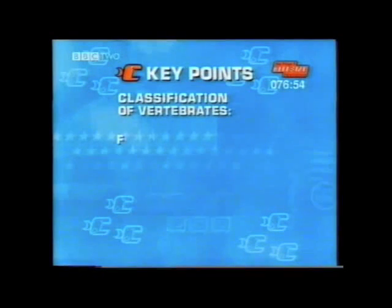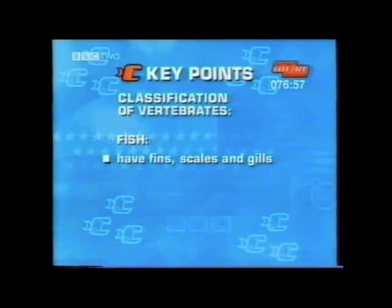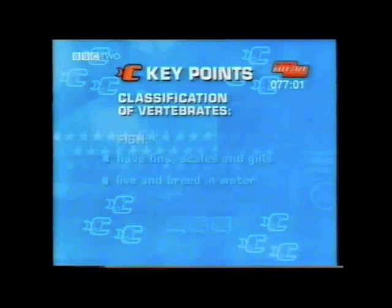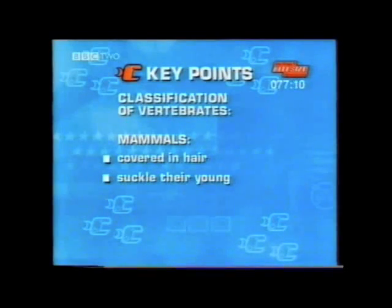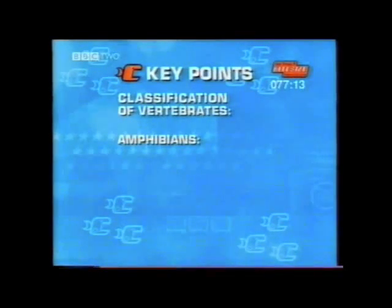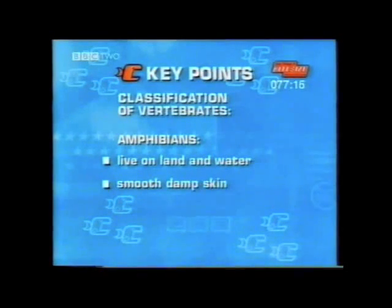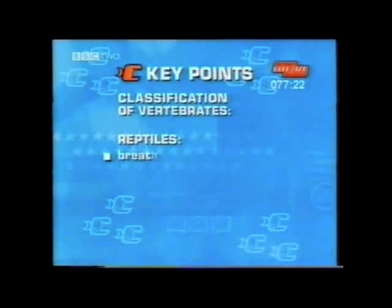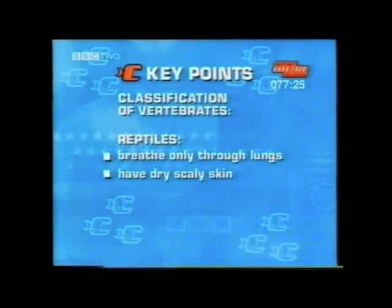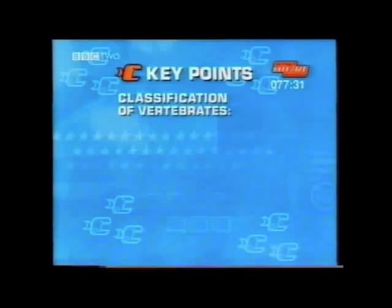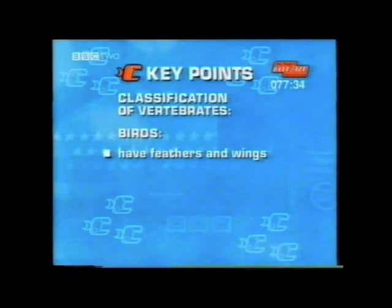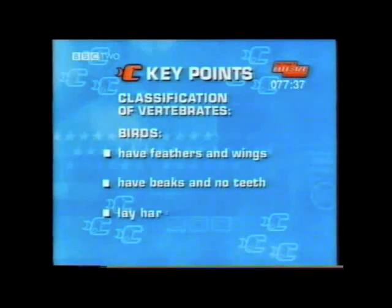The key features of vertebrates you should know are: fish have fins, scales and gills, and live and breed in water. Mammals, which includes us, are covered with hair or fur, and mothers suckle their young with their own milk. Amphibians are the only animals that can live on both land and in water, and they have smooth, damp skin. Don't confuse them with reptiles, which only breathe on land through lungs — they have dry, scaly skin and lay soft-shelled eggs on land. And finally, birds have feathers and wings, beaks but no teeth, and lay hard-shelled eggs on land.